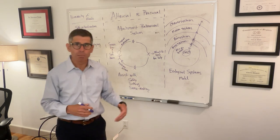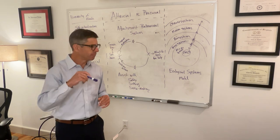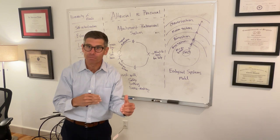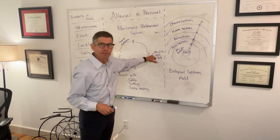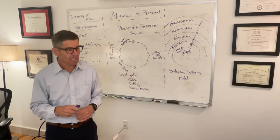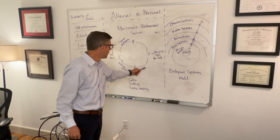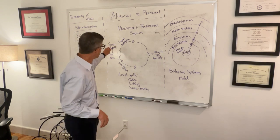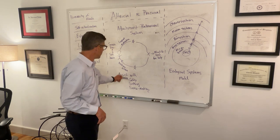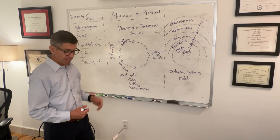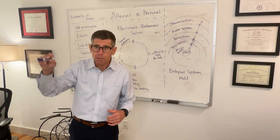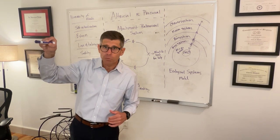Because human beings are so altricial, this circle happens really tight and really fast at the very beginning of an infant's life — they will be constantly alerted to need, whether for warmth, food, or soothing. Over time, the circle slows down and a little bit of distance is created between the little person and the big person.